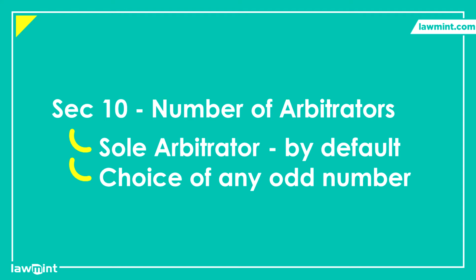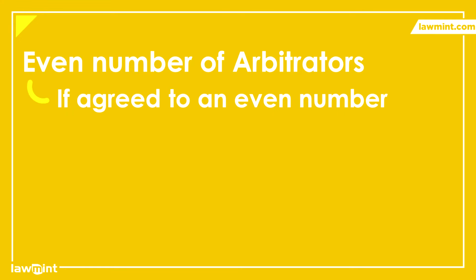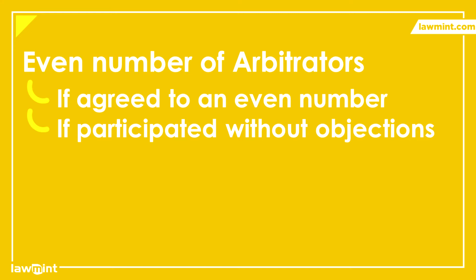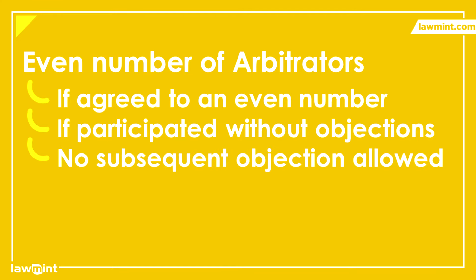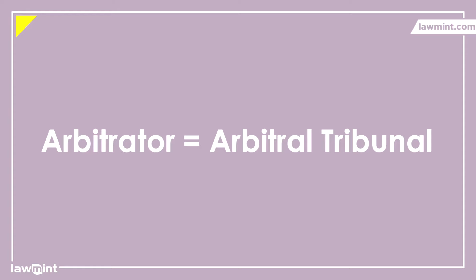The odd number of arbitrators ensures that there is no possibility of a hung decision or a 50-50 decision. However, if the parties have previously agreed to just two arbitrators for any reason and they participate in the process without any objections, they cannot subsequently object to the award of the tribunal. They cannot say that the tribunal was even-numbered and therefore invalid. This was held by the Supreme Court in the Narayan Prasad Lohia versus Nikunj Kumar Lohia case of 2002. To summarize, the terms arbitrator and tribunal are normally used interchangeably.